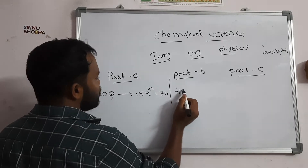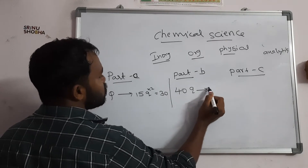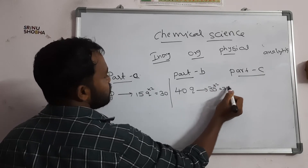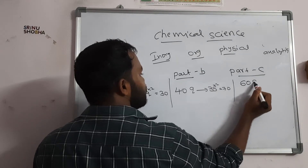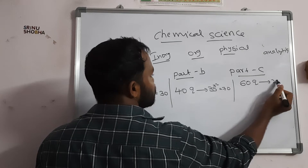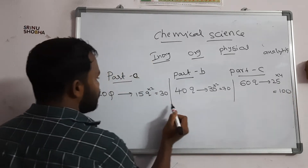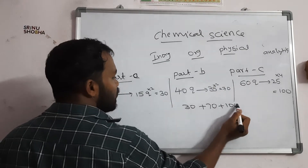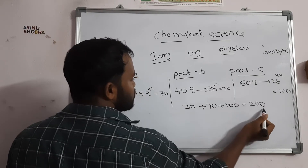In Part B, they will provide 40 questions. We have to do only 35 questions. 35 into 2 is 70 marks. In Part C, they will give 60 questions. From this, we have to do only 25 questions. 25 into 4 is 100 marks. Total: 30 plus 70 plus 100 — the maximum marks of the exam is 200 marks.